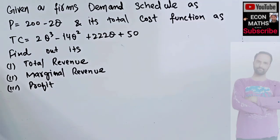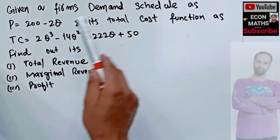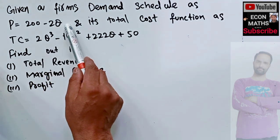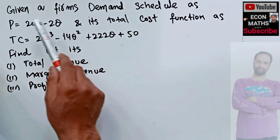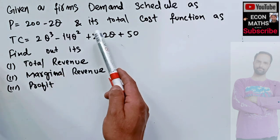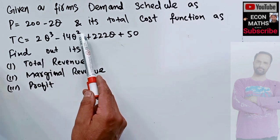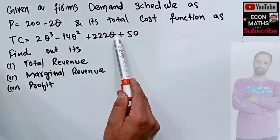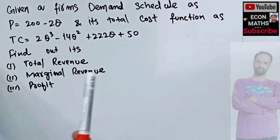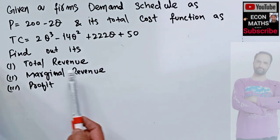In this video we will solve a question asked by a person on YouTube. It is a pretty simple question; I have solved a number of questions like this. The question is: given a firm's demand schedule where p equals 200 minus 2q — this is our inverse demand function, p is the price and q is the output — and its total cost function is TC equals 2q cubed minus 14q squared plus 222q plus 50. We have to find out the total revenue, marginal revenue, and profit.